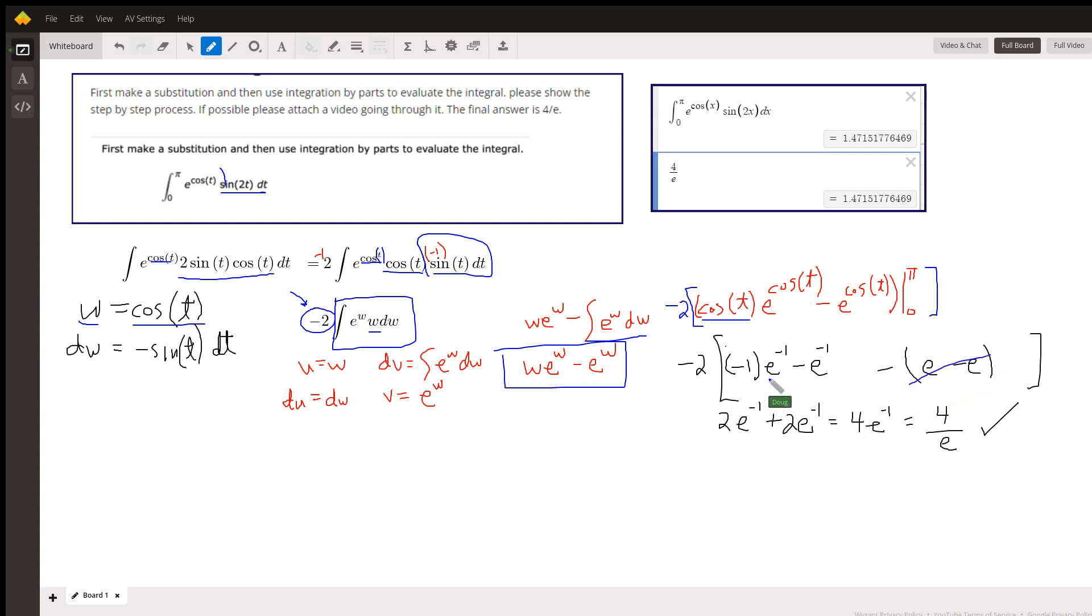So we're taking negative 2 times this expression right here. That'll be positive 2 e to the minus 1, positive 2 e to the minus 1, which is 4 e to the minus 1, which is 4 over e. And by the way, up here...